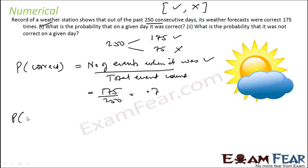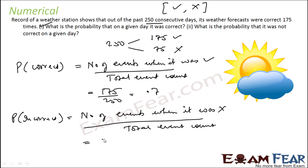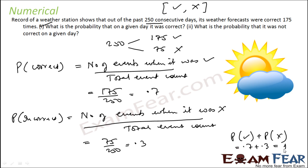What is the probability it was not correct? So probability of incorrect is nothing but number of events when it was incorrect by total event count. That is 75 by 250 and that is 0.3. So if you add these two — probability of correct plus probability of incorrect — you get 0.7 plus 0.3 and that is 1.